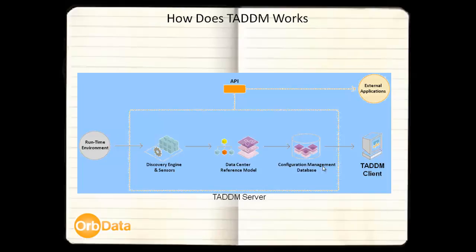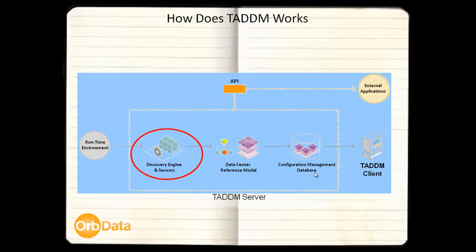So you must be wondering how it all works. Let me explain the workings of the solution at a high level. At the core of the solution is a data center reference model. The model defines how the product identifies and models all the components that it discovers. The discovery engine leverages the knowledge in the model to discover the application environment. In order to do the discovery, we need three things. Firstly, the scope of the discovery, usually specified as an IP address or range.